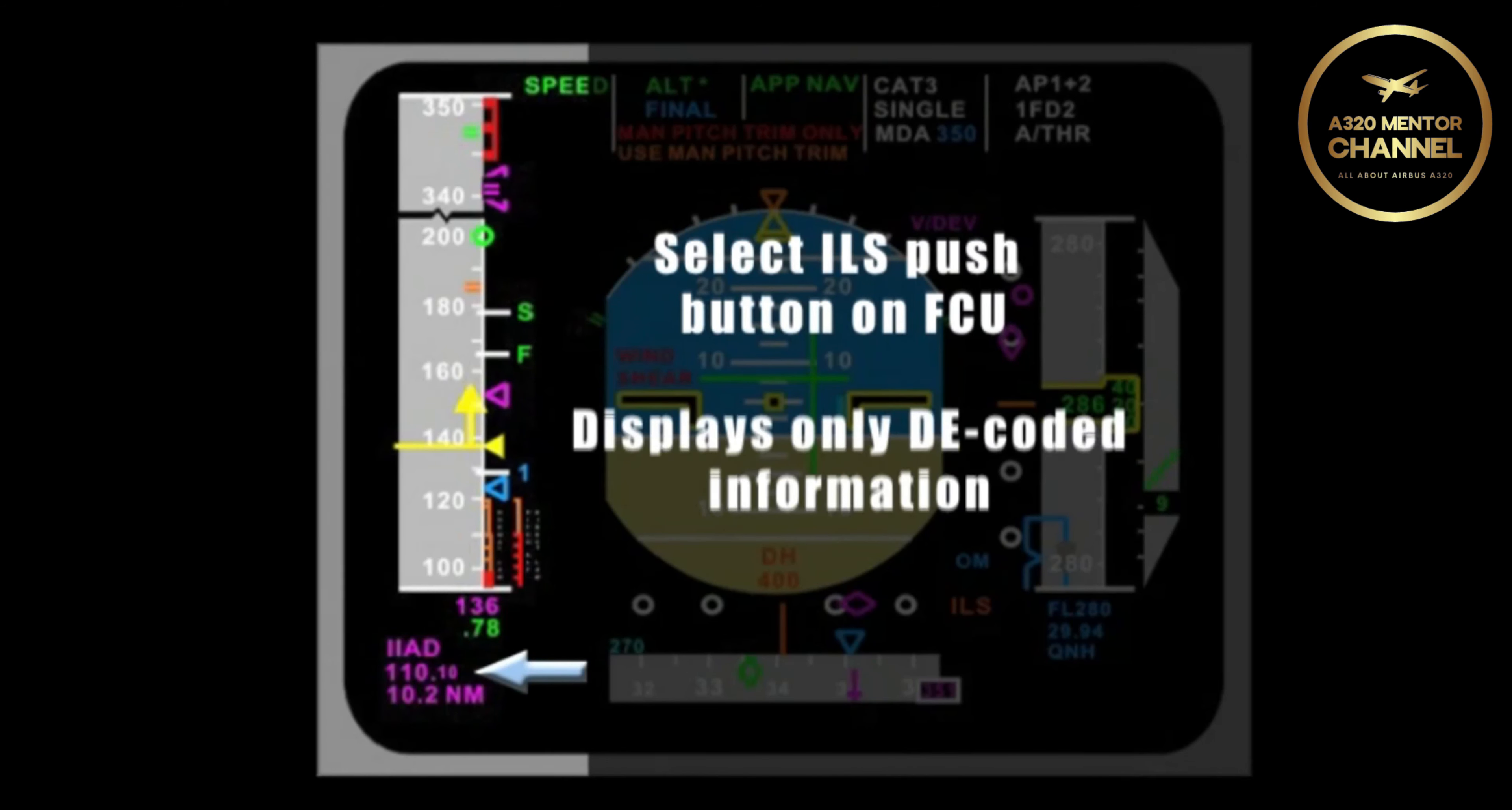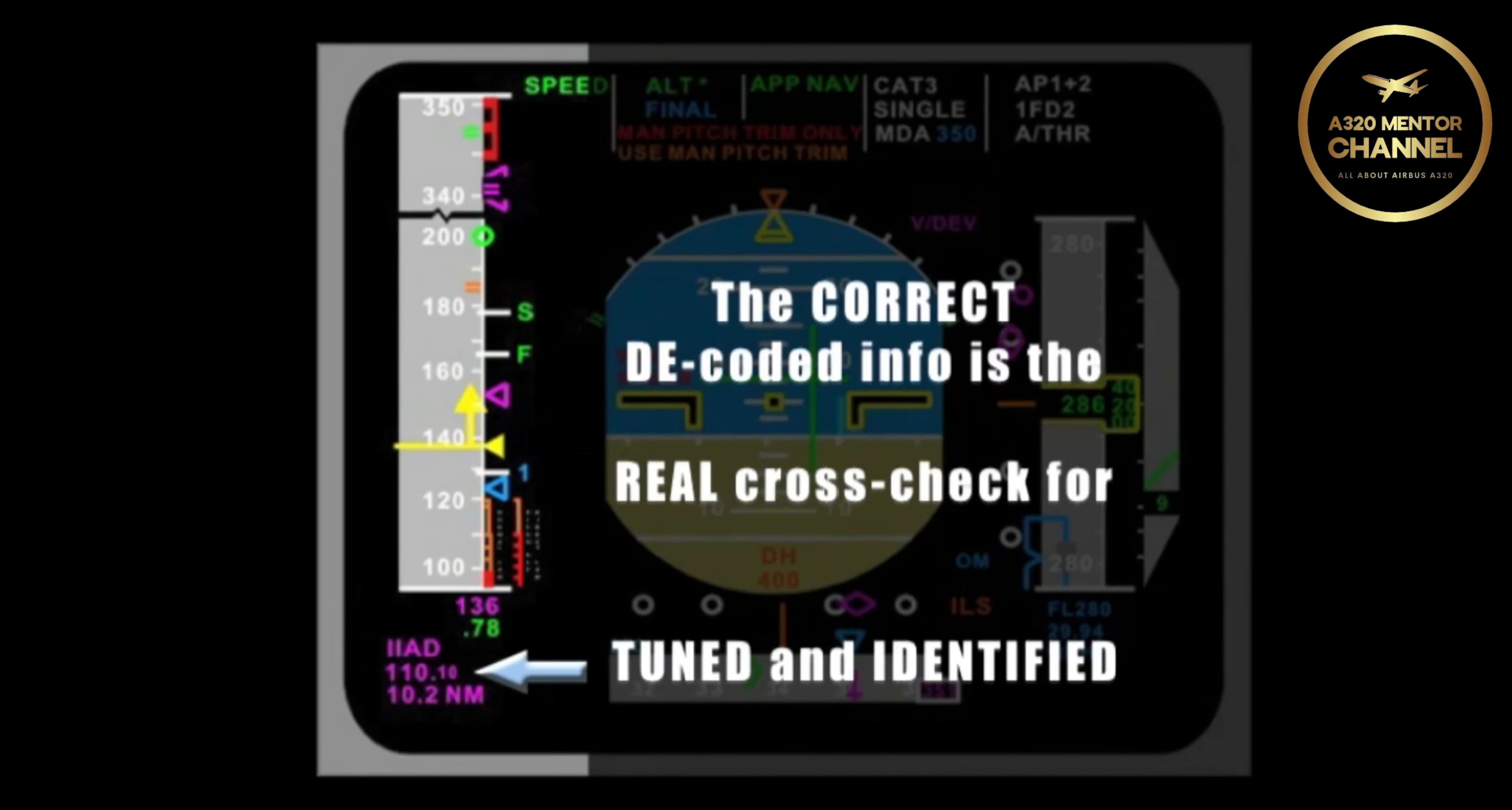It is important to remember that it is only going to bring up what has been decoded, and not necessarily what you have entered. In other words, if you dialed in 110.1, and the radio is decoding ISGC because it is not yet receiving IIAD, then you will see ISGC. This is the real cross-check that verifies you are receiving the correct decoded information for the desired runway. Until you have the correct decoded information, you have not tuned and identified.